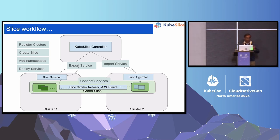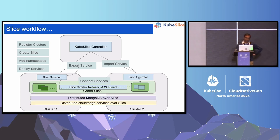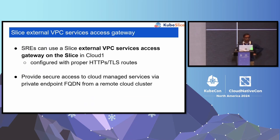This whole thing can be done without any service mesh complexity built into it, and it provides specific isolation. If you want more separation, you can create additional slices — every slice has its own specific overlay network so there is isolation between them. For example, you can do distributed Mongo and other services.